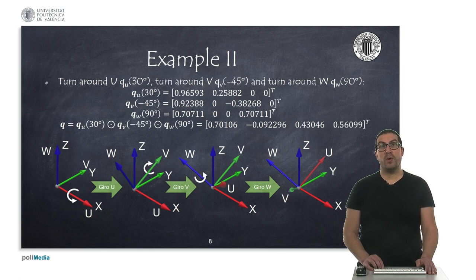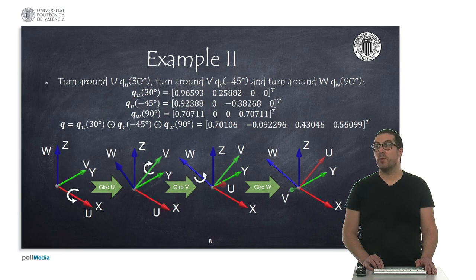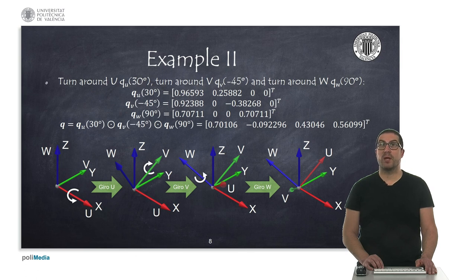Similarly, we can perform rotation operations with quaternions where the turns are with respect to the mobile reference frame, meaning that every time we apply a turn we apply the rotation with respect to the new reference frame. In this case, the operation we must perform is the post-multiplication of quaternions, obtaining different results compared to the previous example, because the axes of the mobile reference frame are different in their direction.